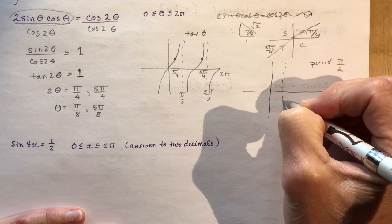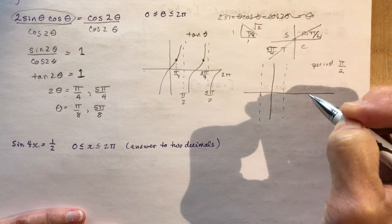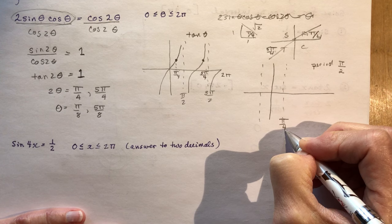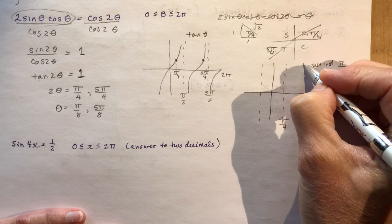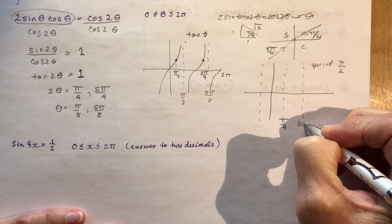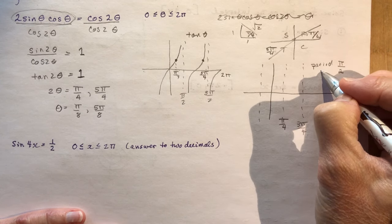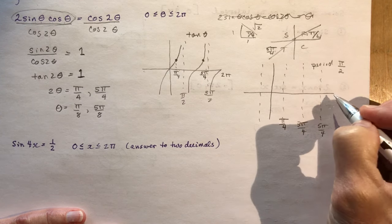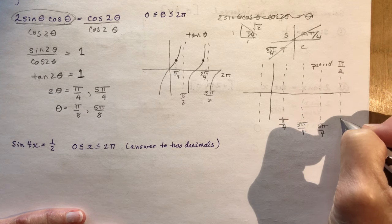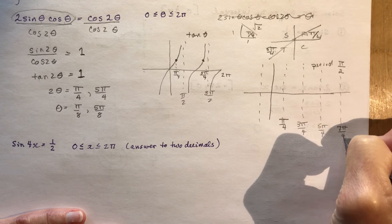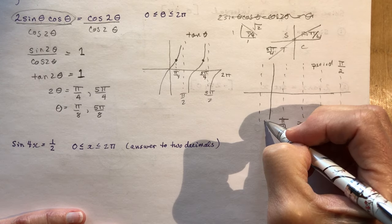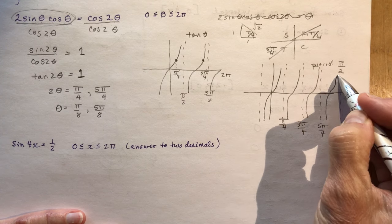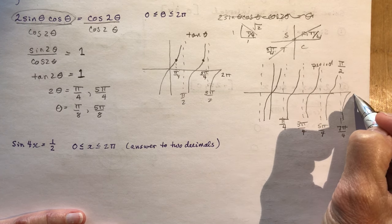So that means that this asymptote here is going to be half of where this one was. Right? So this is going to be π over 4. And the next period is going to be at 3π over 4. Next asymptote, sorry. This is going to be 3π over 4. Add 2 more. You're going to get 5π over 4. And 7π over 4. So just keep adding 2π over 4. So here we go. Now we've got our tan function is going to go like this now.